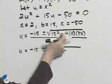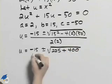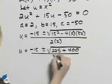Notice we have a subtraction of a negative, so this will be plus 400. That will all be over 4.